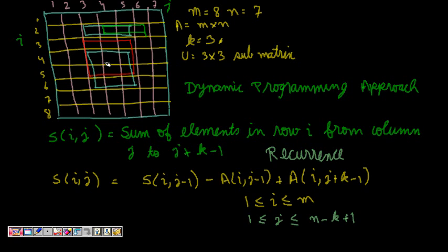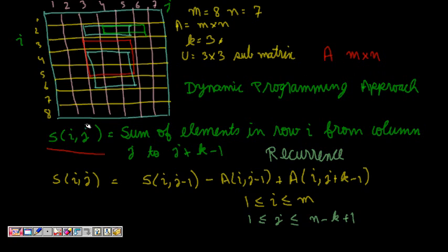We can think of a submatrix as a square sliding everywhere, and a submatrix sum can be considered as the sum of its rows. So this square is the sum of row 1, row 2, and row 3. This leads us to a dynamic programming solution. We define S[i][j] where the matrix A is of size M×N. S[i][j] is the sum of elements in row i from column j to column j+k−1.